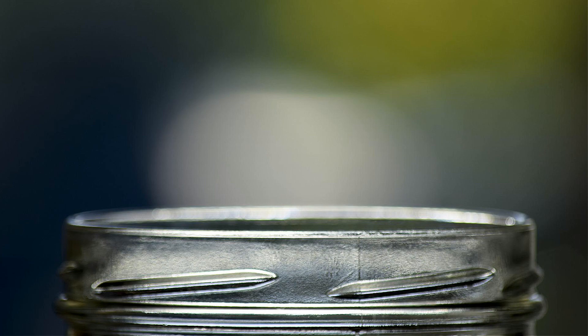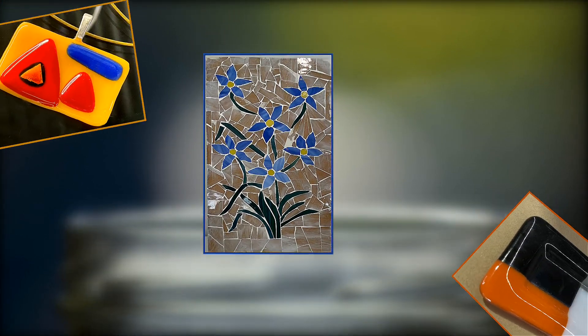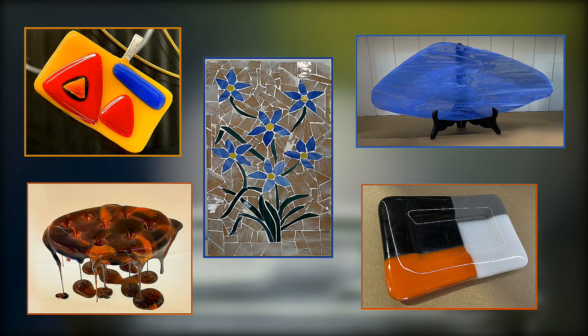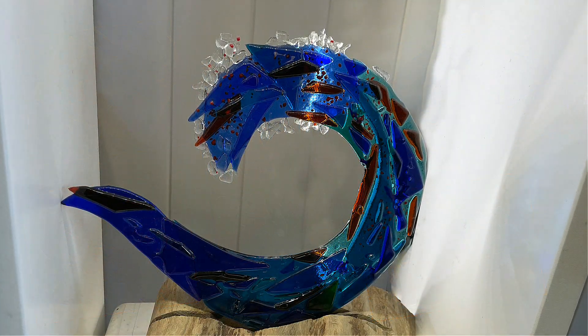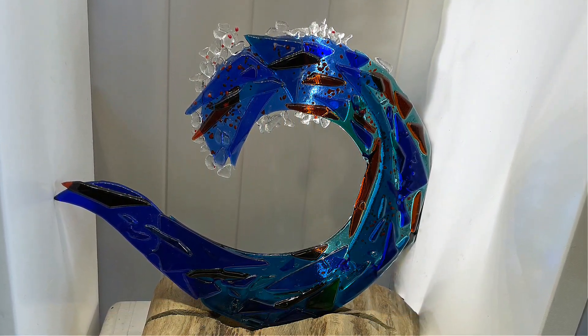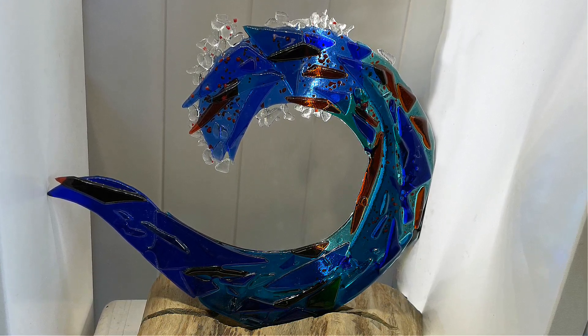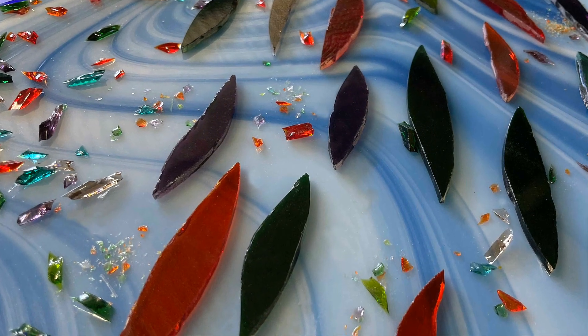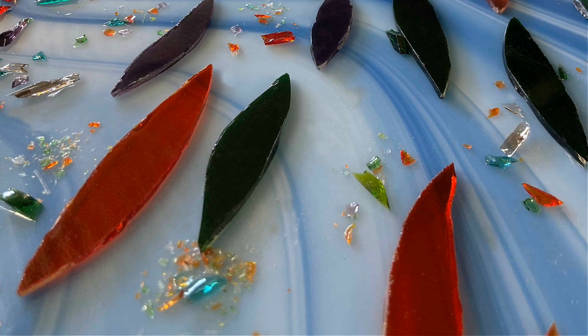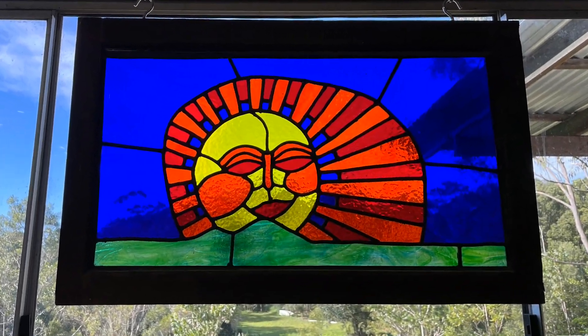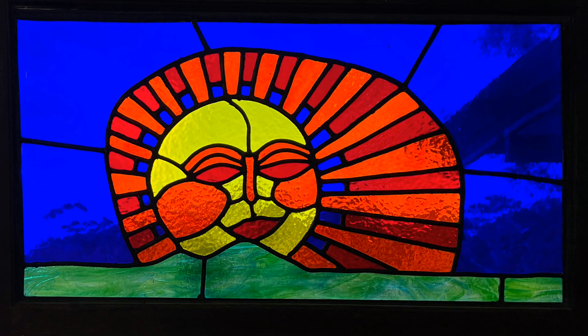Almost all handmade glass art falls into one of three categories or types of glass. There's hot glass, which includes blown glass, solid sculpted glass, and cast glass. Warm glass is a process that involves heating the glass in an oven or a kiln. Then there's cold glass — this technique involves only processing done to the glass, such as grinding, polishing, etching, or engraving.